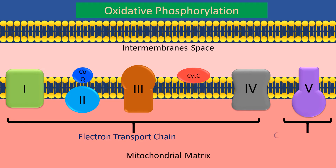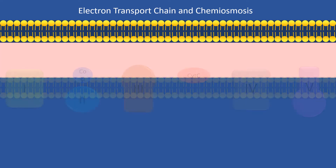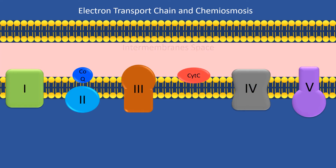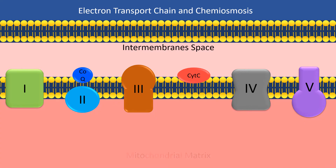Oxidative phosphorylation involves the final stages of the metabolic processes to transform food into energy in the form of ATP. In order to understand the electron transport chain better, it is important that you are familiar with the other metabolic pathways. We have uploaded different videos about these topics in this channel, and you are welcome to watch them.